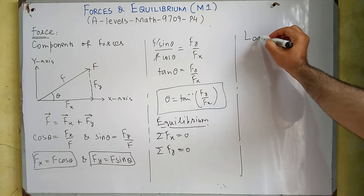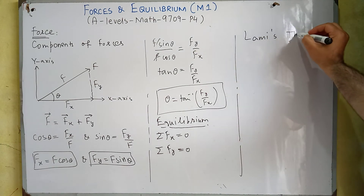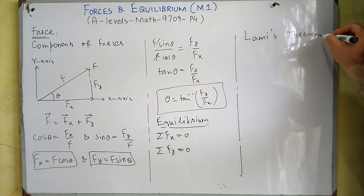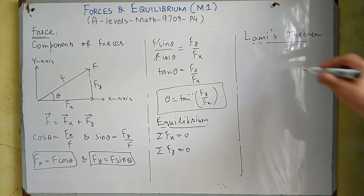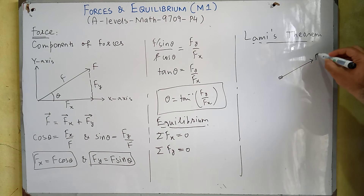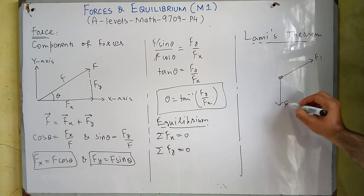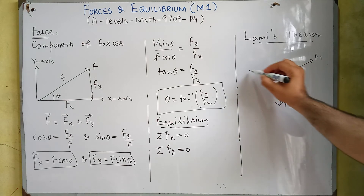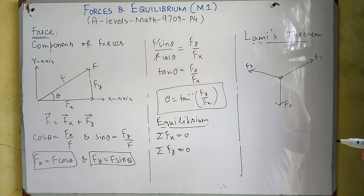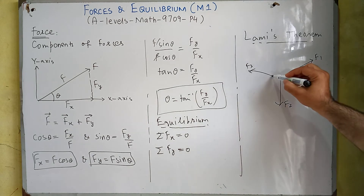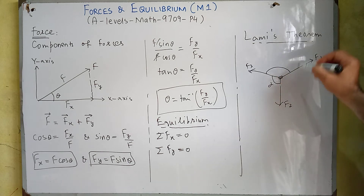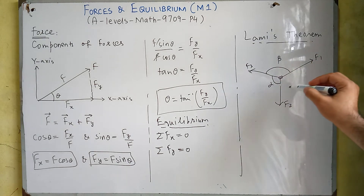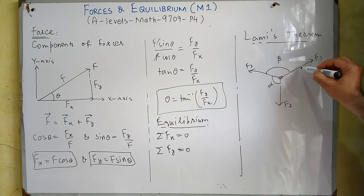In this chapter, regarding equilibrium, we have a very useful theorem called Lami's theorem. Let's suppose we have three coplanar and concurrent forces: force F1, force F2, and force F3. Let's suppose the angle opposite to force F1 is alpha, the angle opposite to force F2 is beta, and the angle opposite to force F3 is gamma.